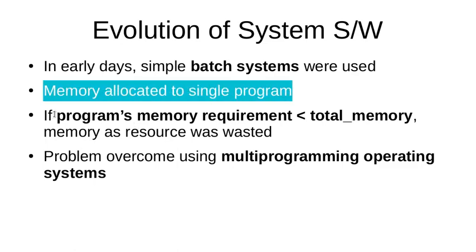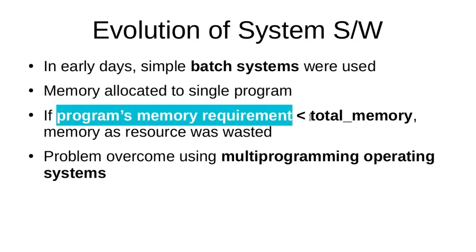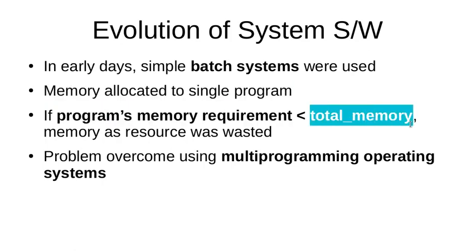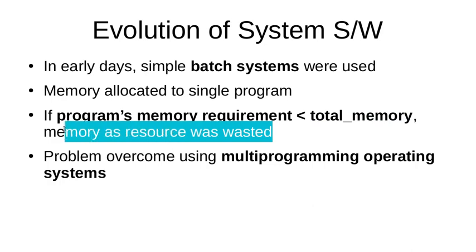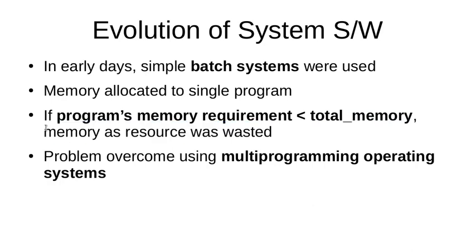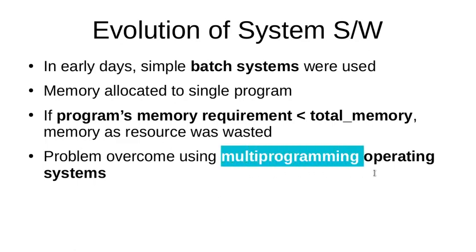In most cases, the program's memory requirement was less than the total memory available, so memory was wasted. Memory is a resource for the machine, so this wastage was a significant problem. This problem of batch systems was reduced or overcome by the use of multiprogramming operating systems.